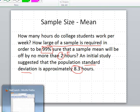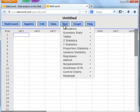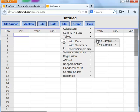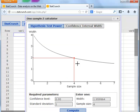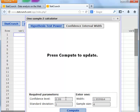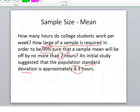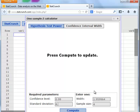Back to StatCrunch. This one is under Stat Z Statistics, so we don't use T. We're going to use Z for this one. One sample, again, sample size. Click on the right tab for confidence interval width. Our confidence level this time was 0.99. We know that the standard deviation was given in the problem as 8.3. So I'm going to enter that, 8.3.